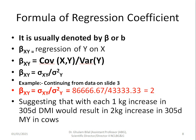We get the value of the regression coefficient as 2. This means that each one kilogram increase in 35-day dry matter intake would result in a two kilogram increase in 35-day milk yield in cows.